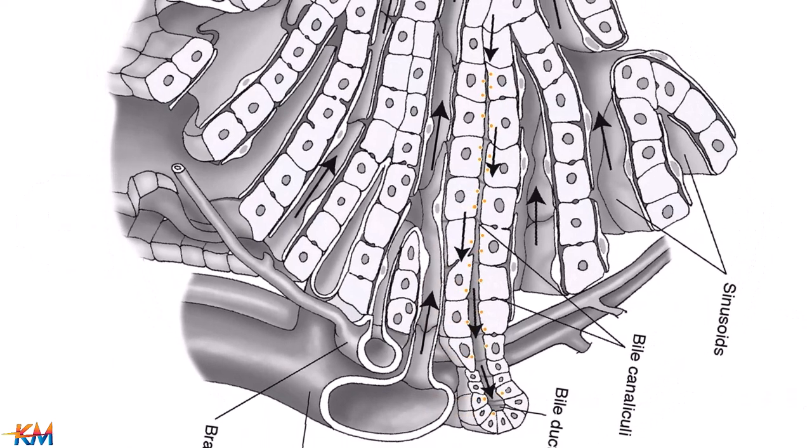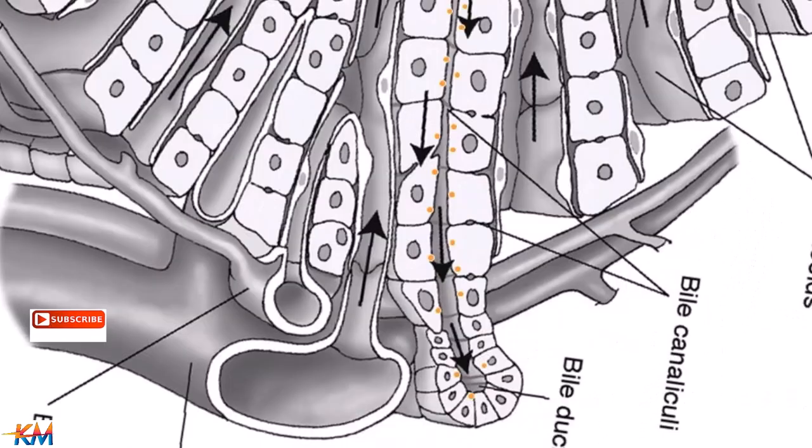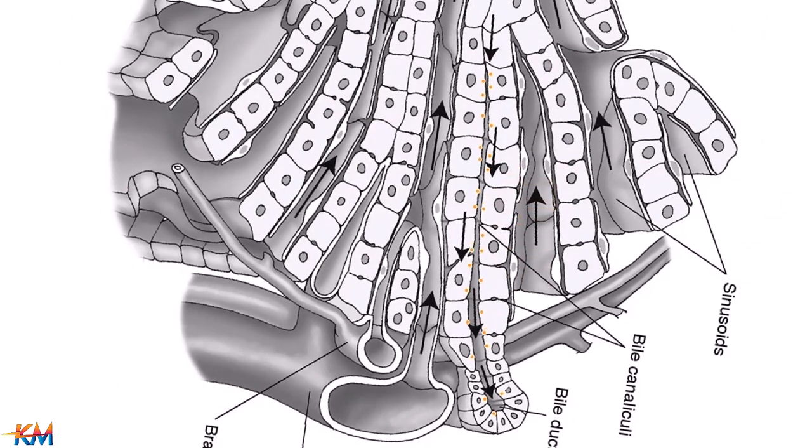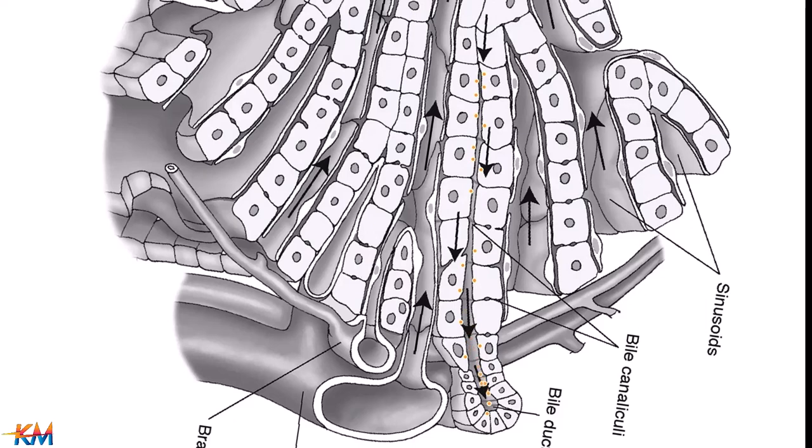Alkaline phosphatase is a membrane-bound intracellular enzyme found in high concentration in hepatocytes and biliary tract epithelia. Alkaline phosphatase is normally excreted into the bile in the bile canaliculi toward bile duct.